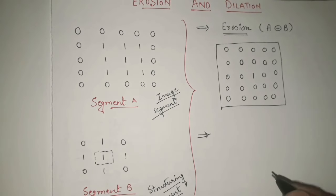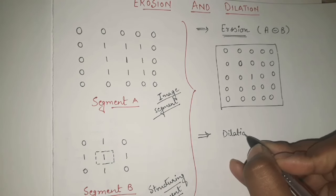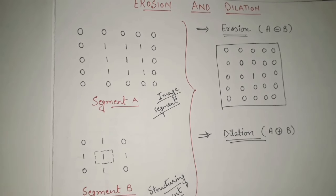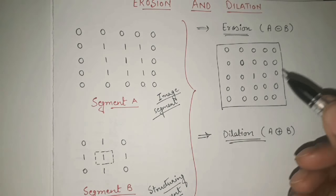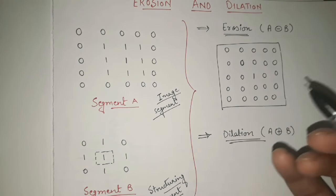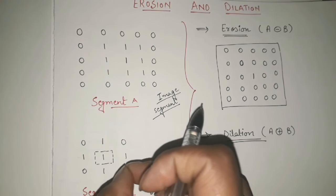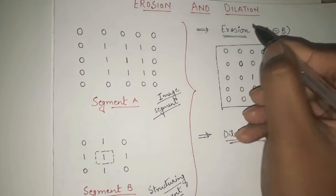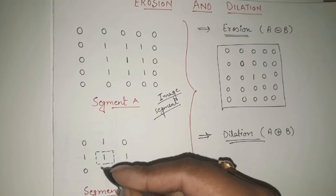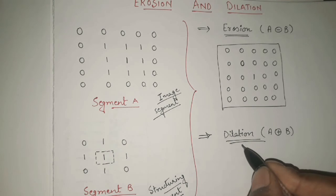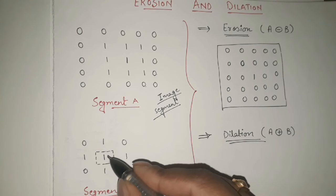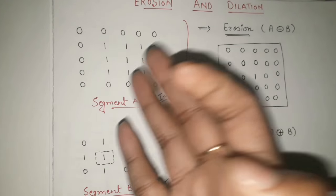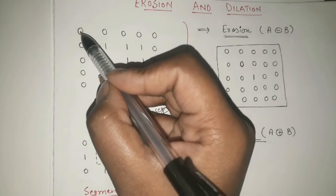Now we consider dilation. Dilation is the opposite of erosion and is specified with its own symbol. In case of dilation, the concept is the same — we place the center element of the structuring element one by one in the image — but the difference is: in erosion, all the ones must be covered, whereas in dilation, at least any one out of the five ones should be satisfied. If anyone is satisfied, I can write that element as one in my answer.